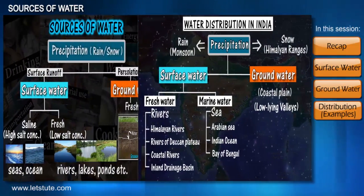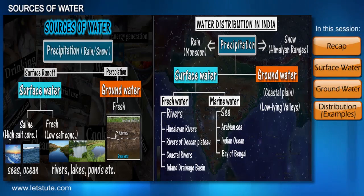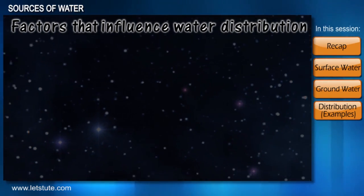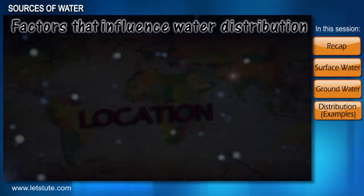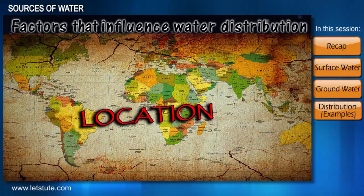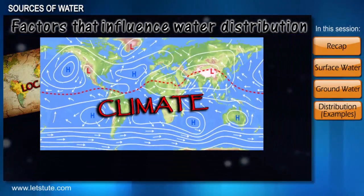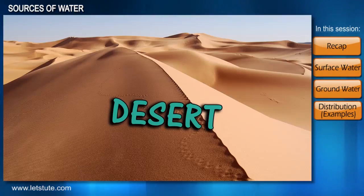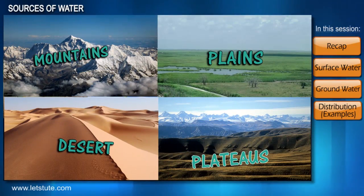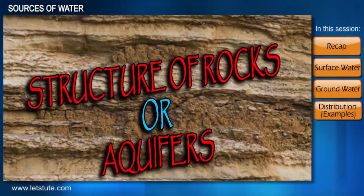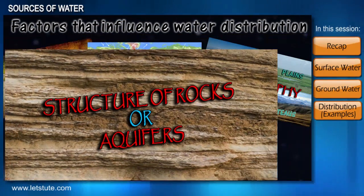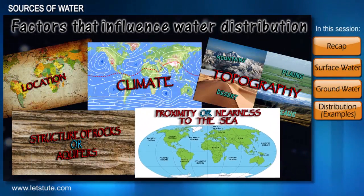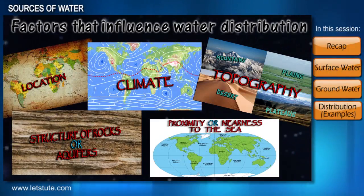So we have seen how India is blessed with all types of water sources. But if we observe, there are certain factors that directly or indirectly influence water distribution — like the location of a country, its climate, the physical structures like mountains, plateaus, plains, and deserts (in other words, topography), the structure of rocks and aquifers, and also a country's proximity or nearness to the sea.